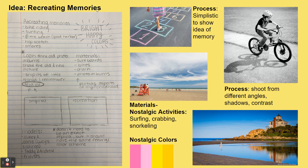Here's another one using that keyword. The idea is recreating memories. The process: simplistic images to show the idea of memory, photographing nostalgic activities. Those are your materials — whatever you photograph. Surfing, crabbing, snorkeling. Process: shooting from different angles, getting shadows and contrasts — that's part of how you take the photos. Using nostalgic colors. All the stuff on the right side is to get the ideas on the left side across. It also shows some of the planning and ideation.